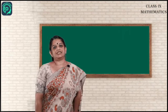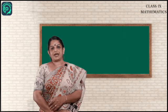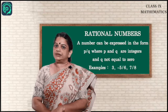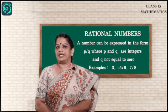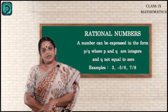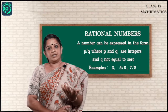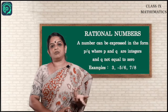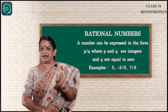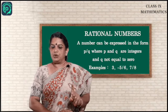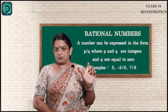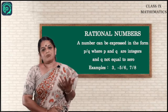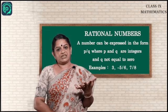Next, rational numbers. A number that can be expressed in the form p/q, where p and q are integers and q is not equal to 0, is called a rational number. If the denominator becomes 0, division is not possible — we get an indeterminate or infinite form. That is why the special condition is given that q should not be 0. Examples include 3, -5/6, 7/8, etc.